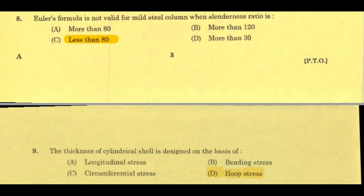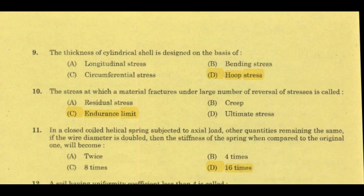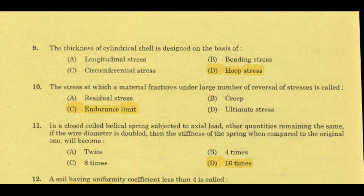Next question: the thickness of a cylindrical shell is designed on the basis of hoop stress — option D. Hoop stress equals P·R by T, where P is internal fluid pressure, R is radius, and T is thickness. Longitudinal stress equals P·R by 2T, and shear stress equals P·R by 4T.